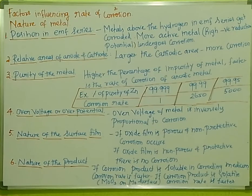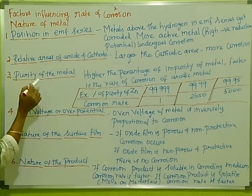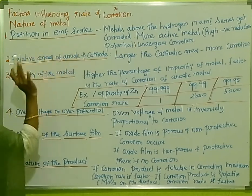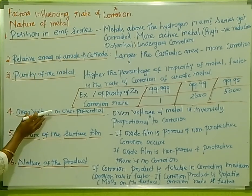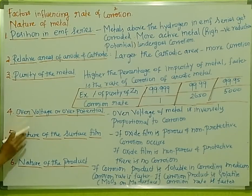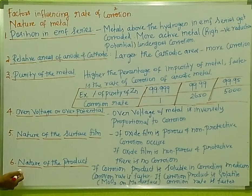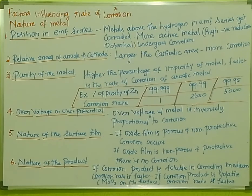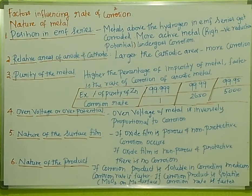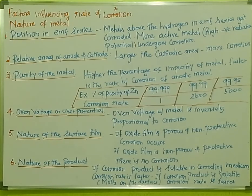So, the factors that influence the corrosion rate are: position in the EMF series, the anodic or cathodic area ratio, metal purity, overvoltage, nature of the surface oxide film, and nature of the corrosion product. In the next video, we will see the nature of the environment as a factor in corrosion. If you like this video, please comment, share, and subscribe to the channel. Thank you.